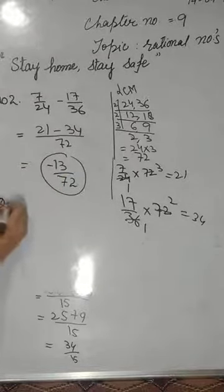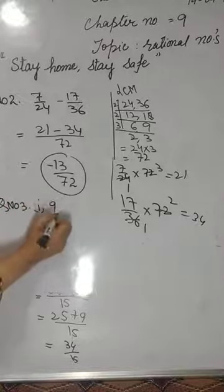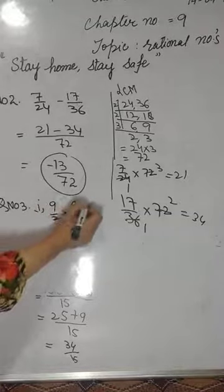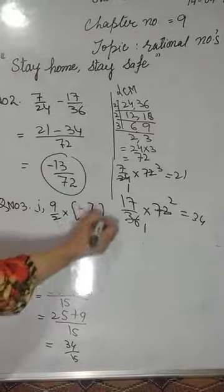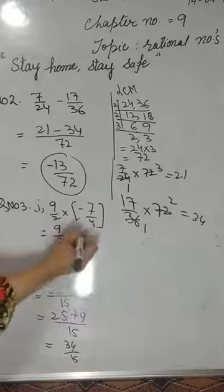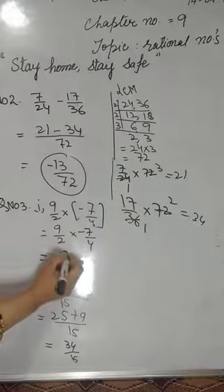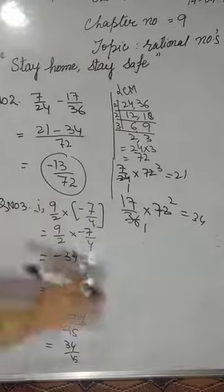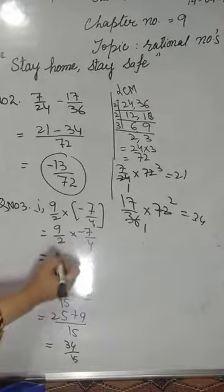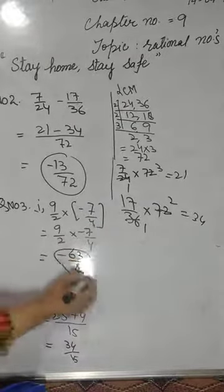Question number 3: seedhe multiply karna hai — find the product. Pehla part: 9 by 2 into minus 7 by 4. Bracket se pehle bracket off karenge, bracket se bahar nikalenge, uske baad seedhe multiply: 9 × 7 = 63, answer hai minus 63 by 8.